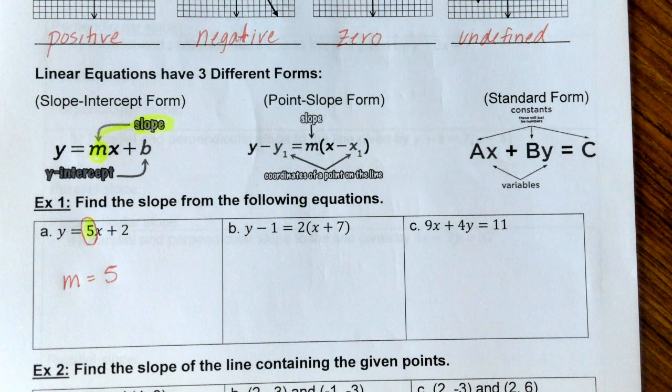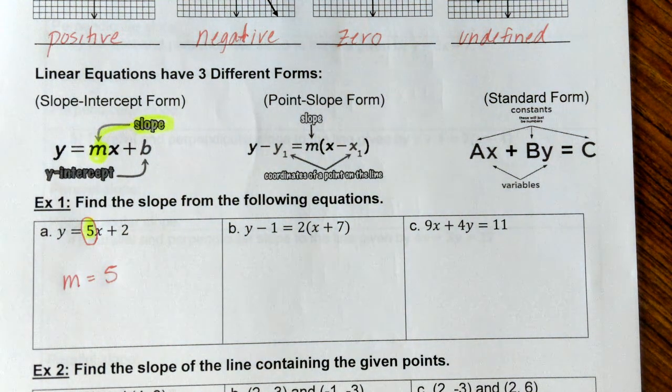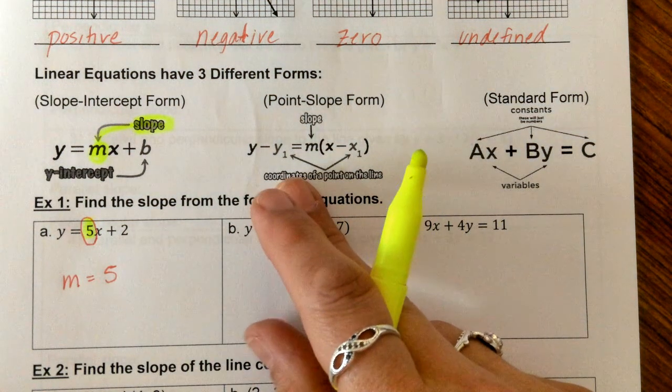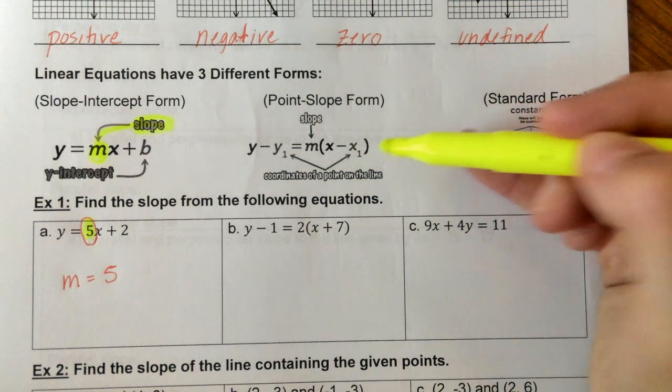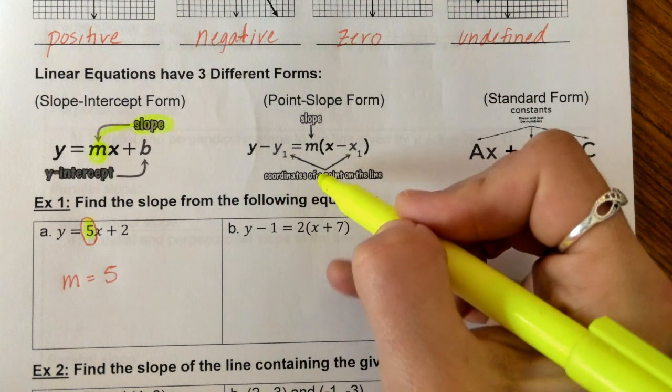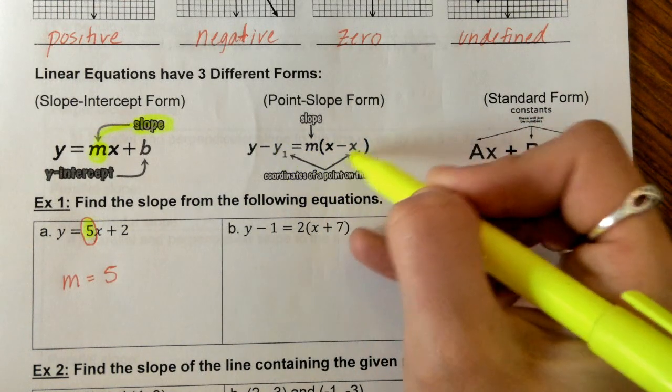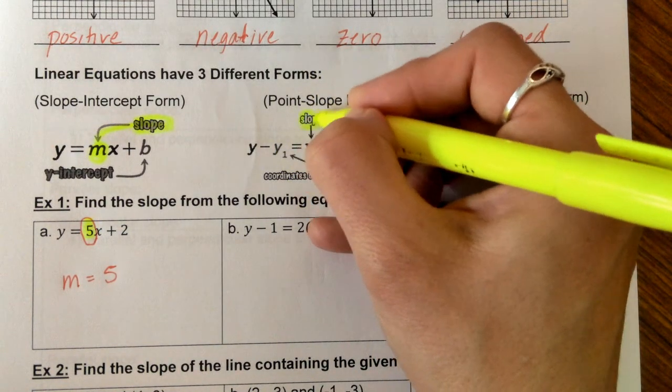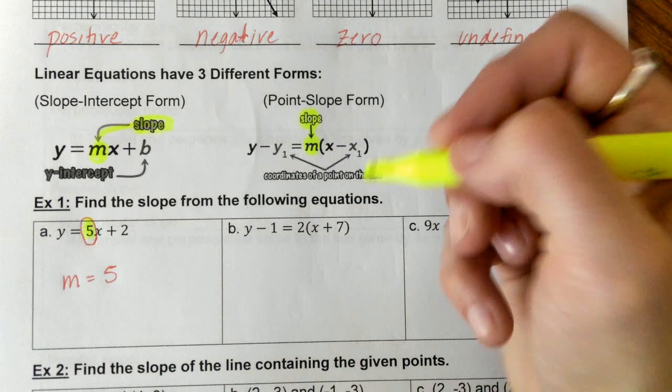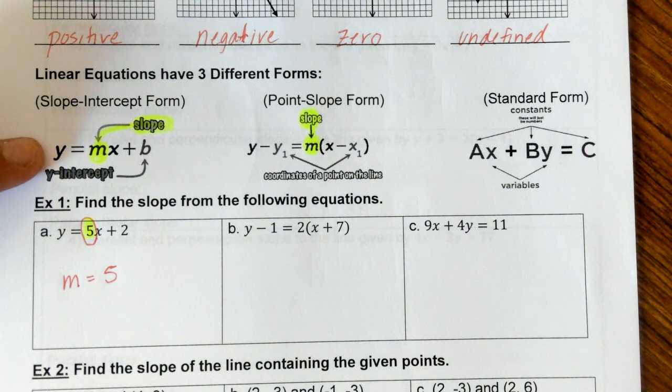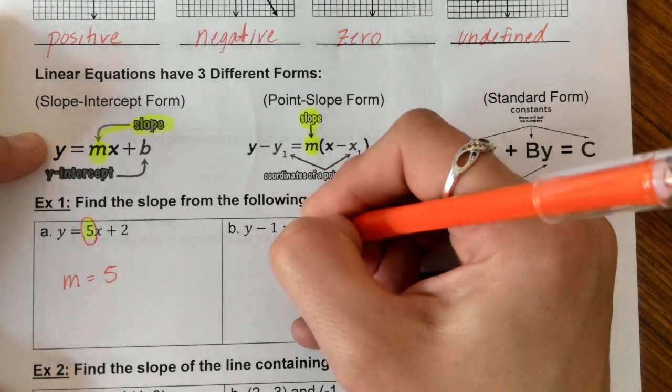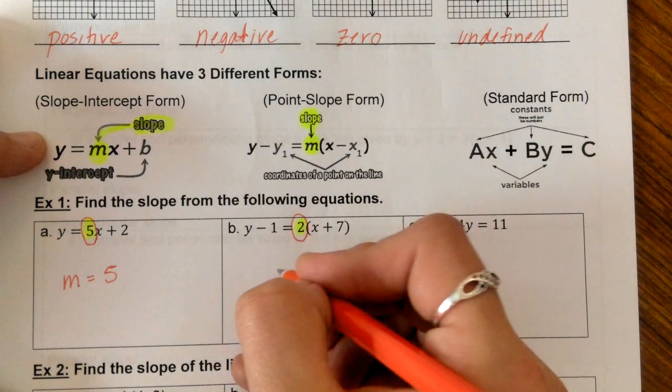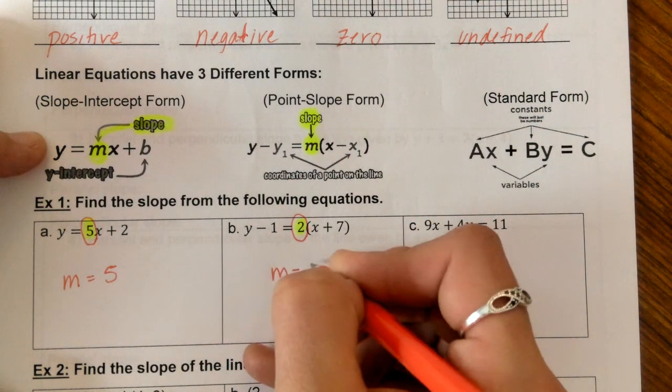If we take a look at B, we're in point-slope form. Y minus Y1 equals M parentheses X minus X1. We'll talk more about points later. These are coordinates of points that you're given. Just as easy as slope-intercept form, your slope is right in front of those parentheses. So your slope here is just going to be equal to 2.